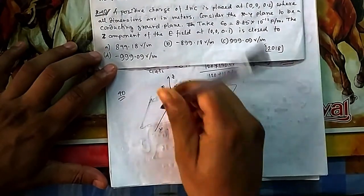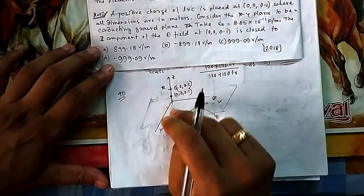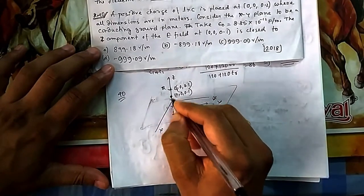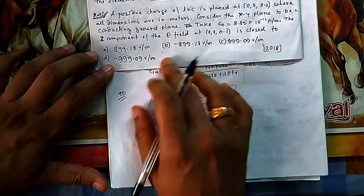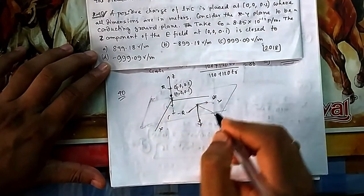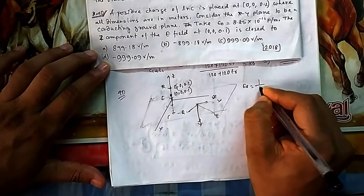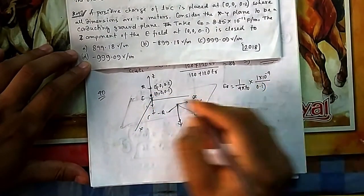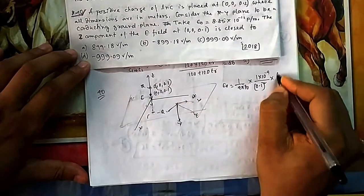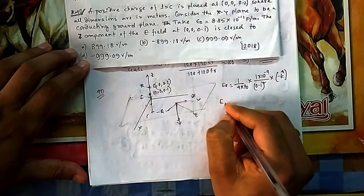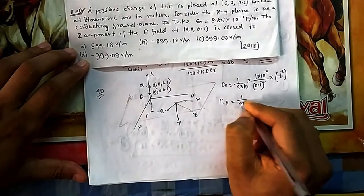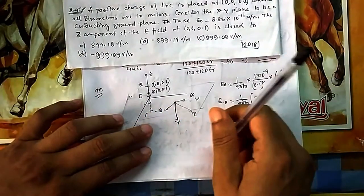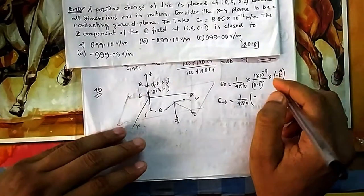At the point (0, 0, 0.1), both the real charge and image charge contribute only z-components since all are on the z-axis. The real charge at (0,0,0.2) is 0.1 m above the field point, pushing E downward (−k̂ direction). The image charge at (0,0,−0.2) is 0.3 m below the field point; being negative, it also pulls E downward. So the total z-component is definitely negative — either option B or D.